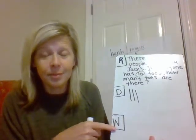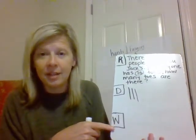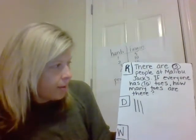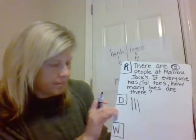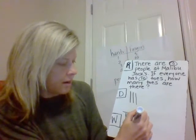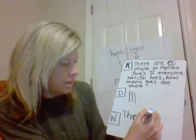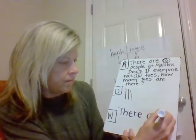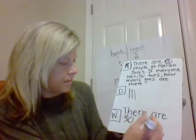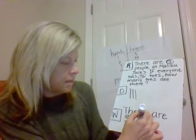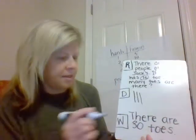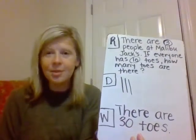That W — that's the write stage. Now we're going to write our answer to the question: how many toes are there? There are 30 toes.